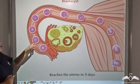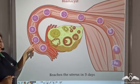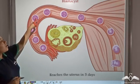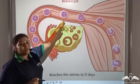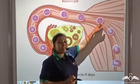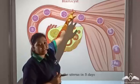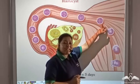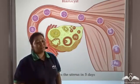Fertilization between the egg or ovum and the sperm takes place in the oviduct. After fertilization, the zygote undergoes cell division to form two cells, then four, until a mass of compact cells is formed by the end of five days. This compact cell mass is known as the blastocyst, which reaches the uterus within five days and gets embedded in the uterine wall by the seventh to eighth day.